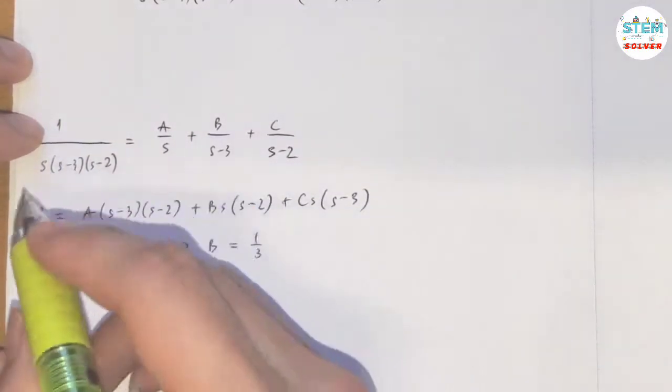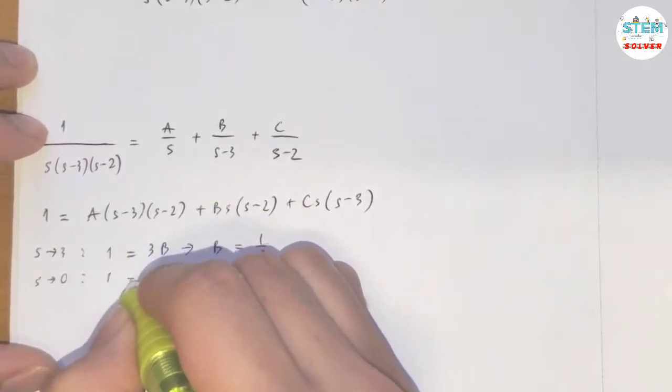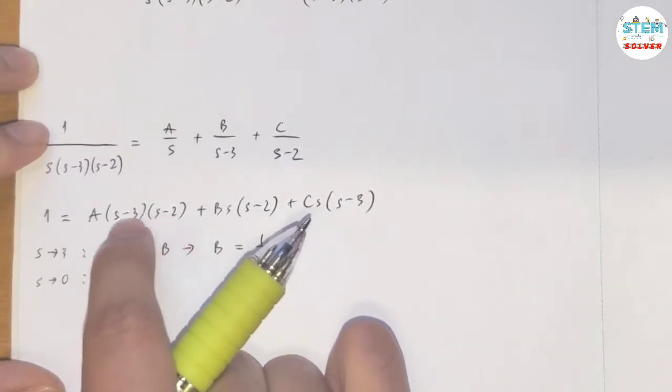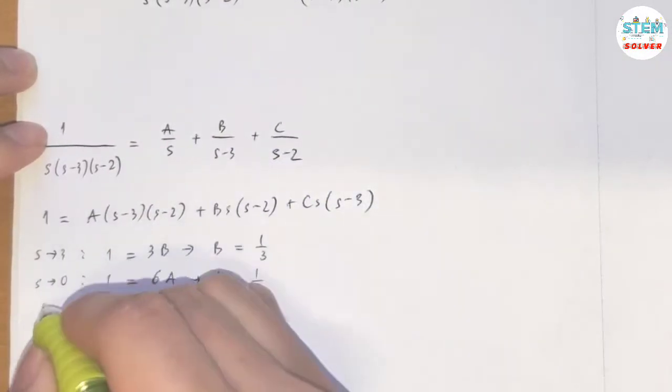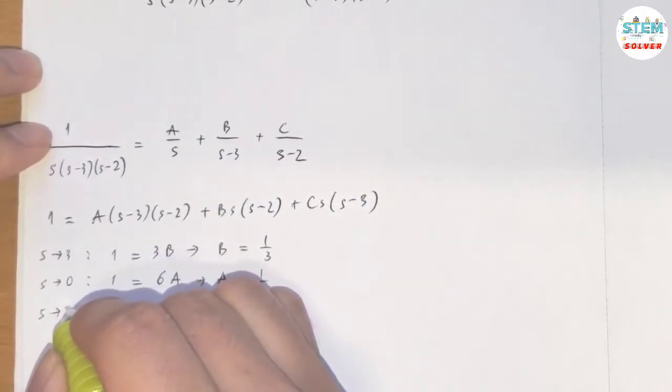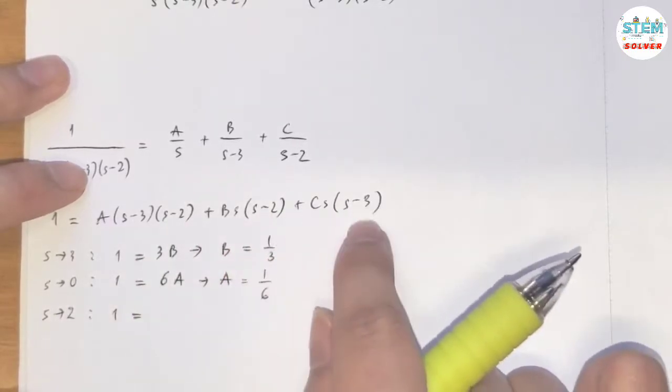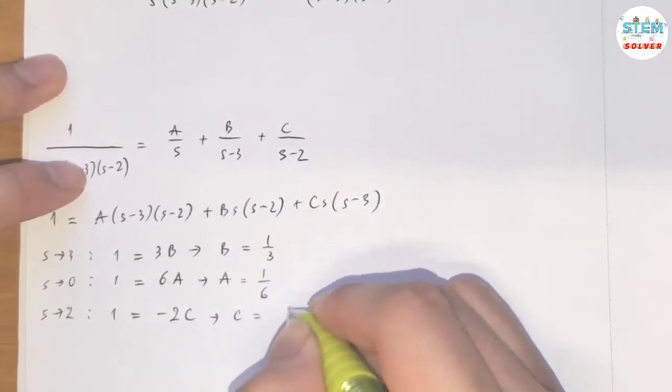We're going to do the same thing for the rest. Let s approach 0. On the left side, still have 1. On the right side, it eliminates this and this, so 0, 0, positive 6, 6a, then a equals 1/6. Let s approach 2. On the left side, still 1. On the right side, 2 minus 3, negative 1, negative 2c, then c equals negative 1/2.